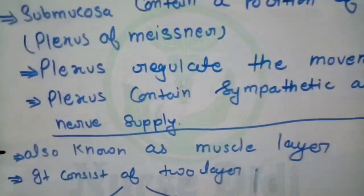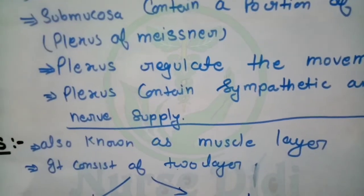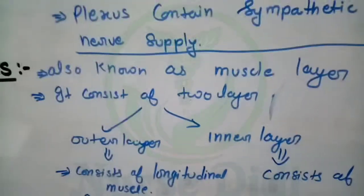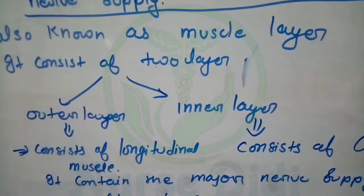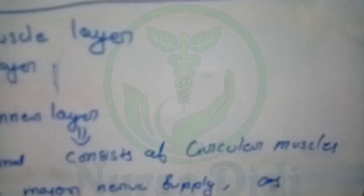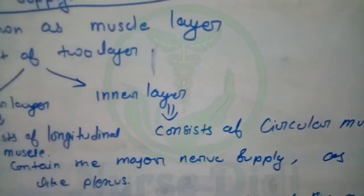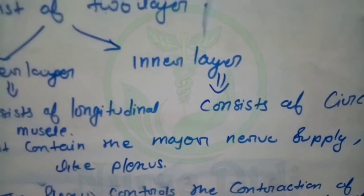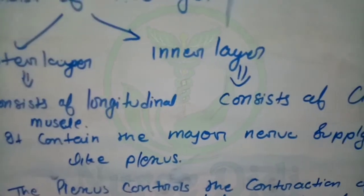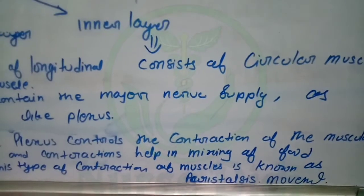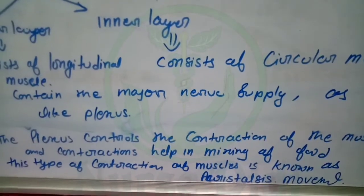Let's go to our third layer, which is Muscularis, also known as the muscles layer. It consists of two layers: the outermost layer of longitudinal muscles and the innermost layer of circular muscles. It contains a major nerve supply - a plexus, similar to what we studied in the upper layer. The plexus controls the contraction of the muscles.